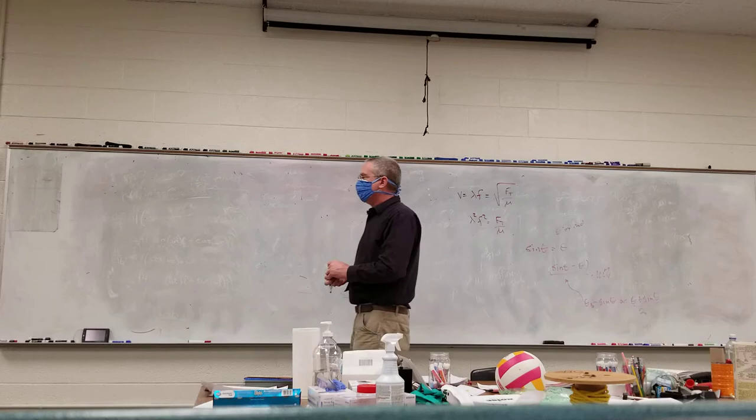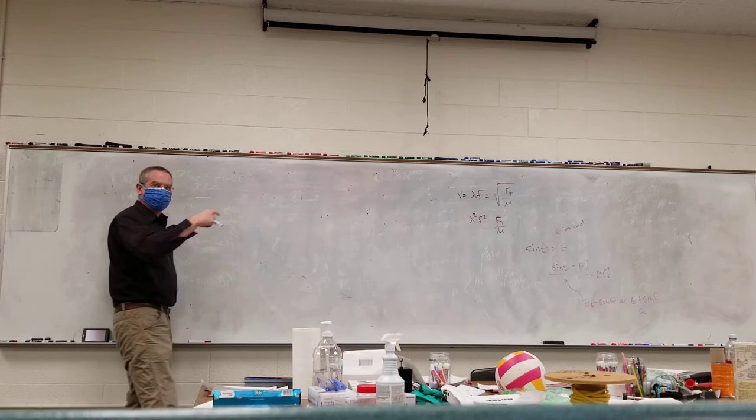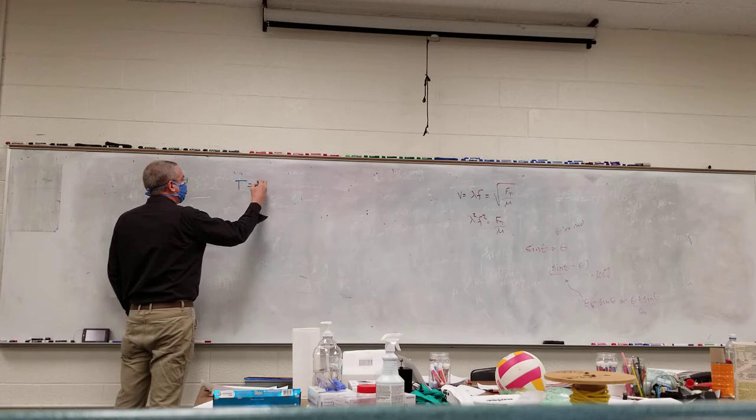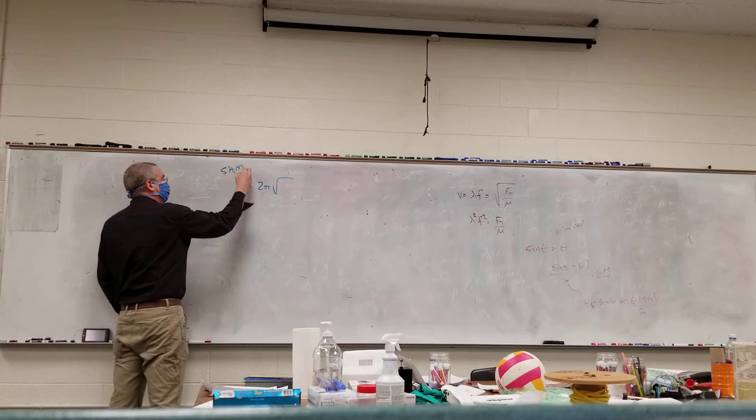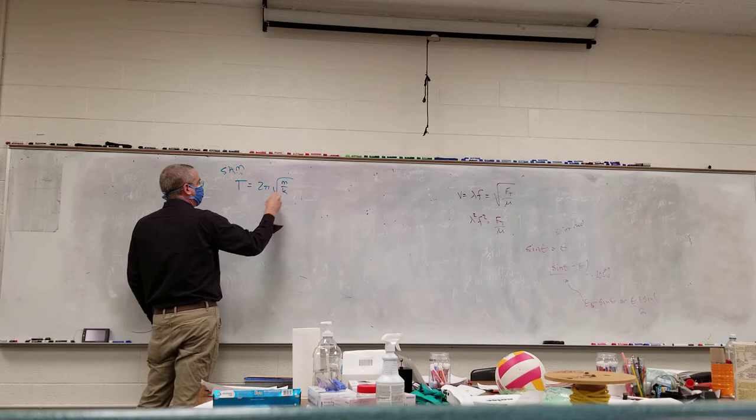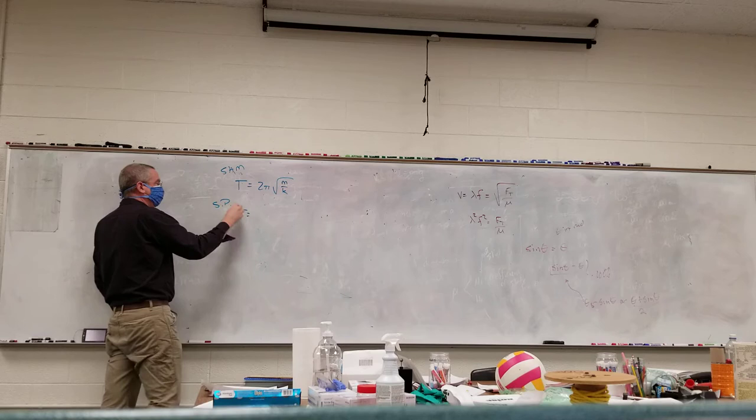When we derived the simple pendulum period formula, the period for simple harmonic motion is 2π√(m/k), where k is the spring constant, and for the simple pendulum, 2π√(L/g). These are basically the two formulas.